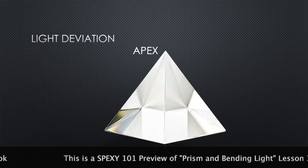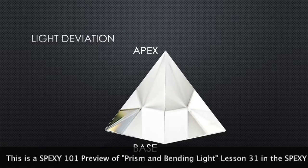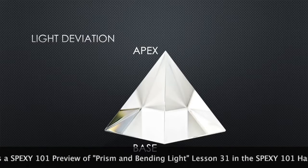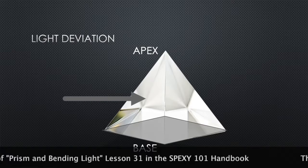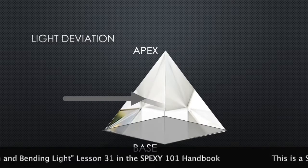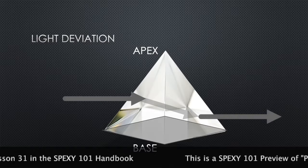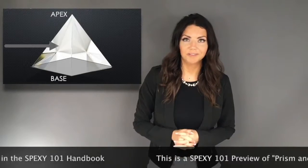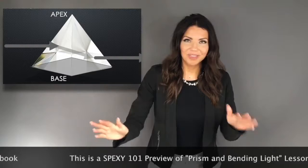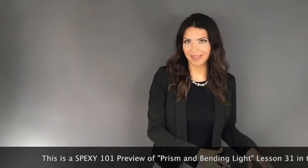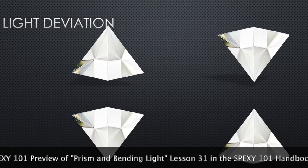Every prism has two components: an apex and a base. The base is that thicker part. What happens is that light will travel to the prism, and light always bends towards the base. This is a law — the light will always bend towards the base. Remember that as we go through this.